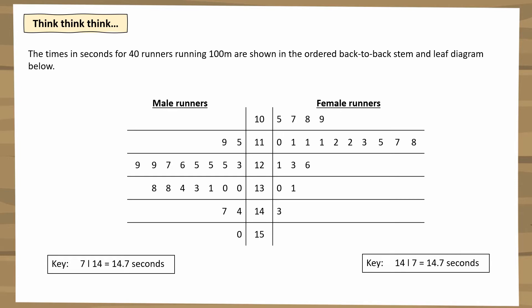In a back-to-back stem and leaf diagram, the stem is drawn in the middle. The female runners' times are drawn out to the right, and the male runners' times are drawn out to the left. This is why it's called a back-to-back stem and leaf diagram.